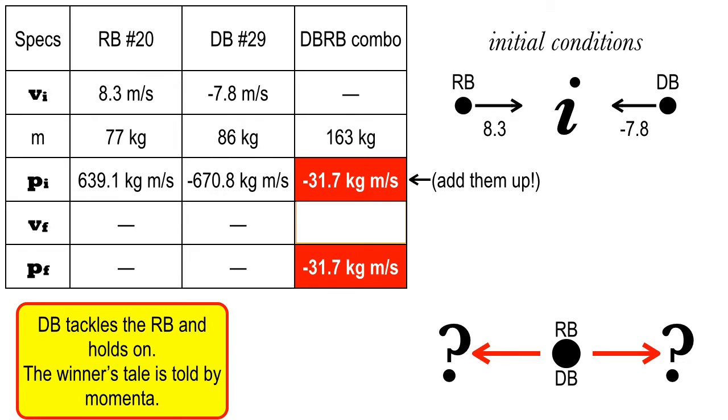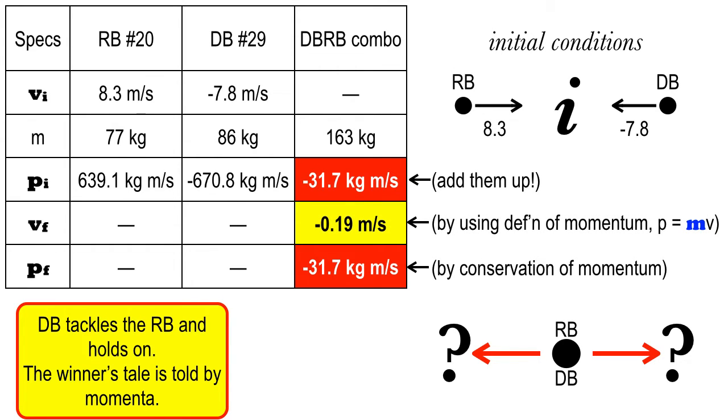So if you just add these two momenta, the running back initial momentum, the defensive back initial momentum, you get negative 31.7 kilograms meters per second. So now you know who wins. Because afterwards, after the interaction, supposedly the momentum, the final momentum of the system, the DB-RB combo, that big dot, is going to be negative 31.7 as well. So that tells the tale. You now know who wins. The defensive back. He tackles the running back. And that ends the play.